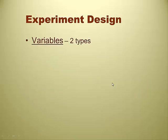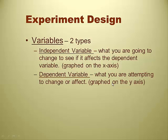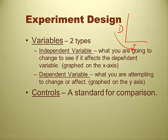Experiment design — know the definition and know the differences between variables. There are two types of variables. The independent variable is what you are going to change to see if it affects the dependent variable; it is the variable you can manipulate, and it gets graphed on the x-axis. The dependent variable is what you are attempting to affect; it is usually graphed on the y-axis. A helpful hint: the x-axis gets the independent variable, and the dependent is the y-axis — read together, that spells 'DIY.' A control is a standard for comparison.